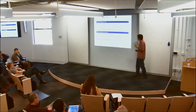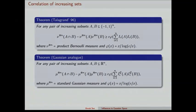The next result is Talagrand's correlation inequality, which Nathan talked about. If you have two increasing subsets of the discrete hypercube, Talagrand proved a beautiful theorem giving a lower bound on the correlation between sets A and B in terms of the sum of products of their influences. The function involved is x / log(e/x). This is a very influential result. We can use Talagrand's result to get a Gaussian analog: for increasing subsets in R^n, the influences are replaced by the Gaussian influences and we get the exact same result.